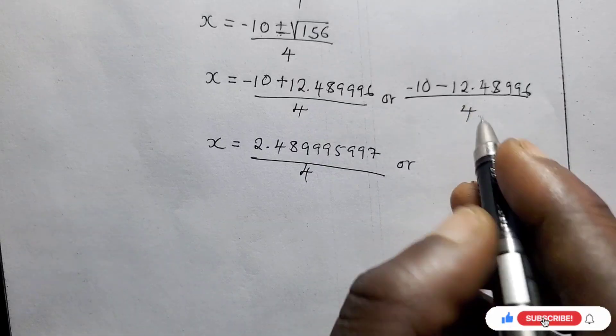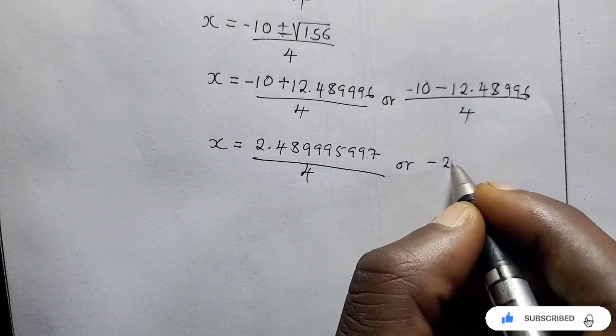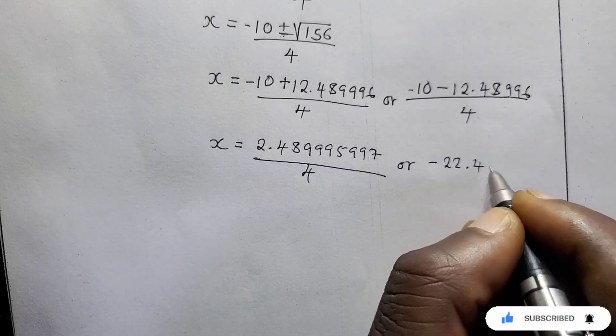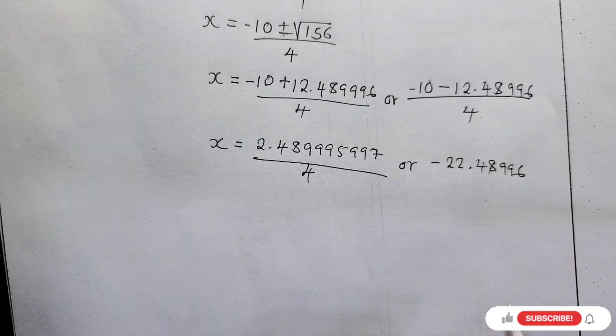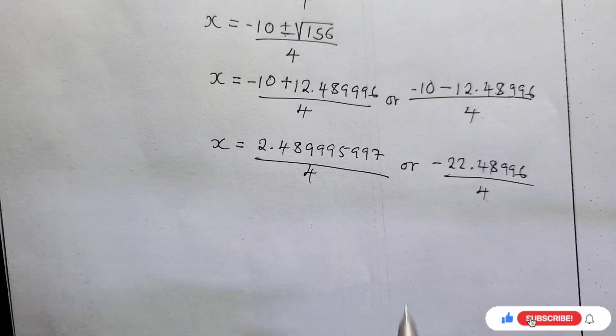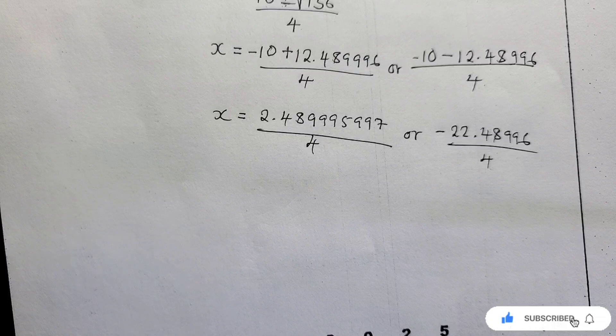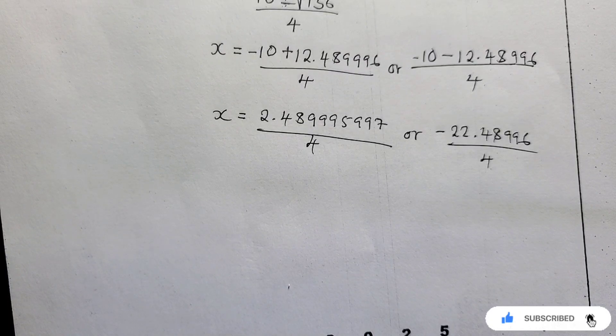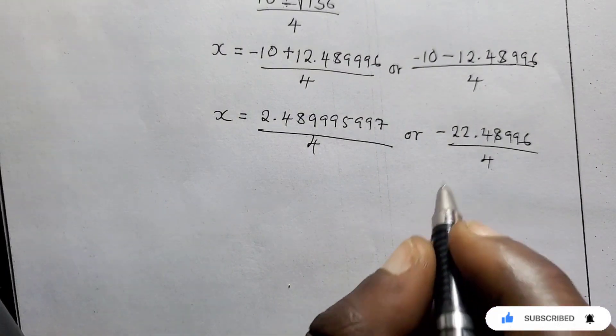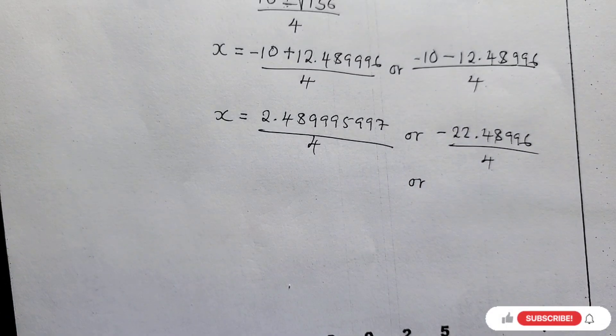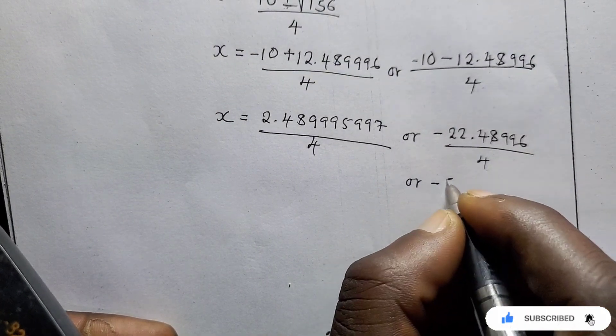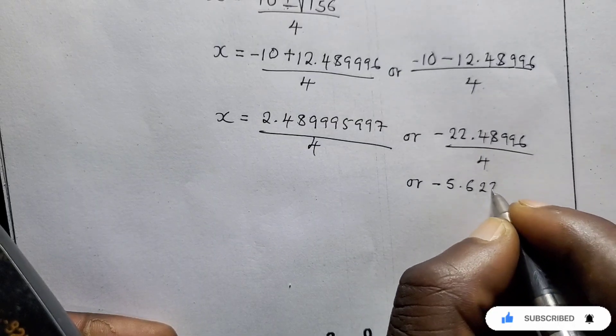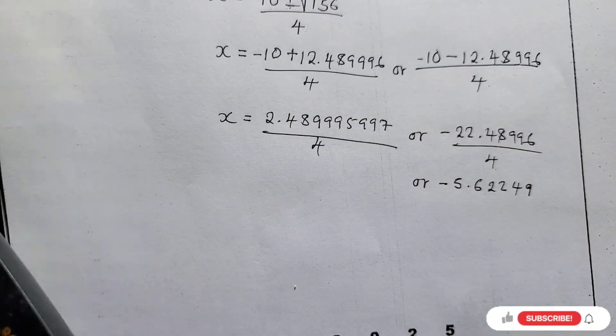This is going to give us negative 22.489996 over 4. Then this is a matter of dividing. Since on the calculator I still have this answer, so I can first deal with it, this side. So divided by 4. This is giving me negative 5.62249.